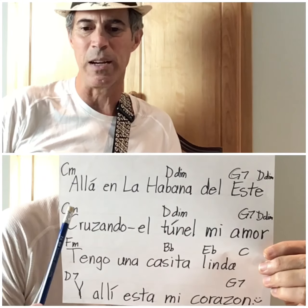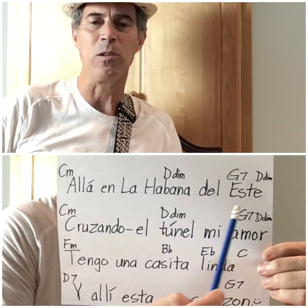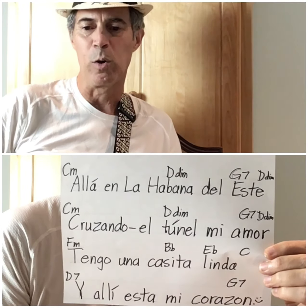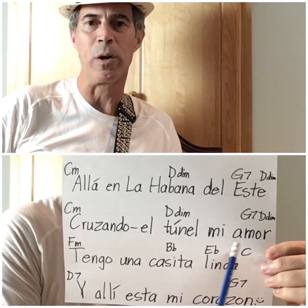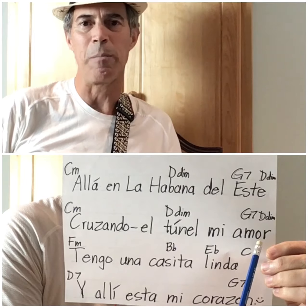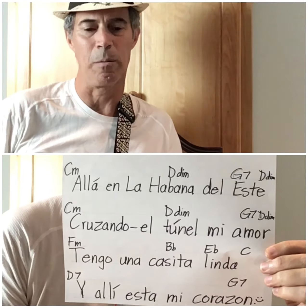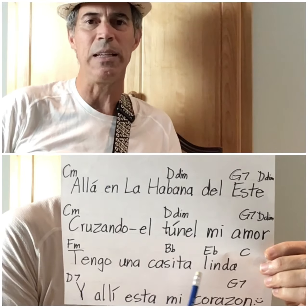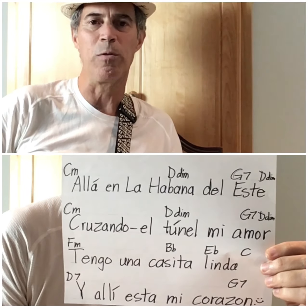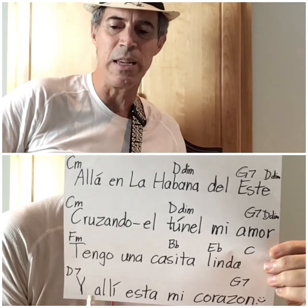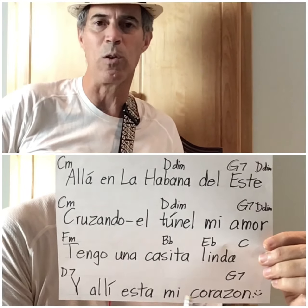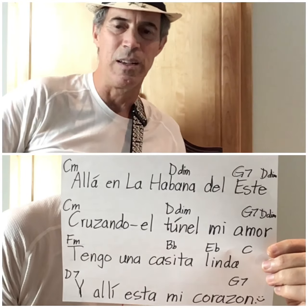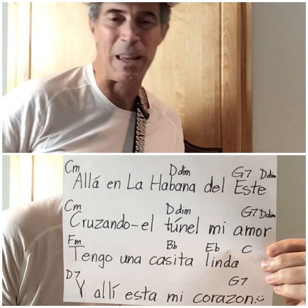The first line, "Allá en La Habana del Este," means over there in the east of Havana. "Cruzando el túnel mi amor" means crossing through the tunnel, my love. "Tengo una casita linda" — I have a beautiful little house. "Y allí está mi corazón" means and there is my heart, meaning my love.